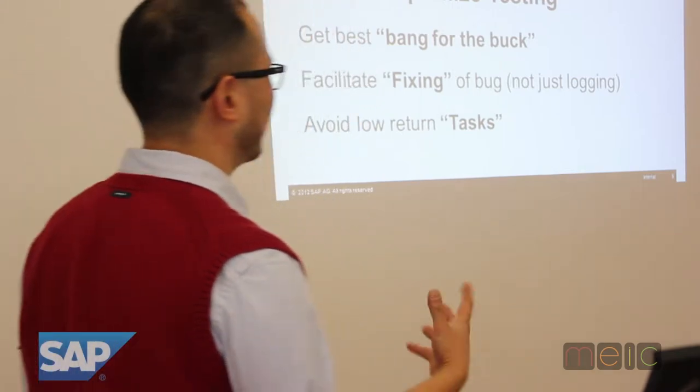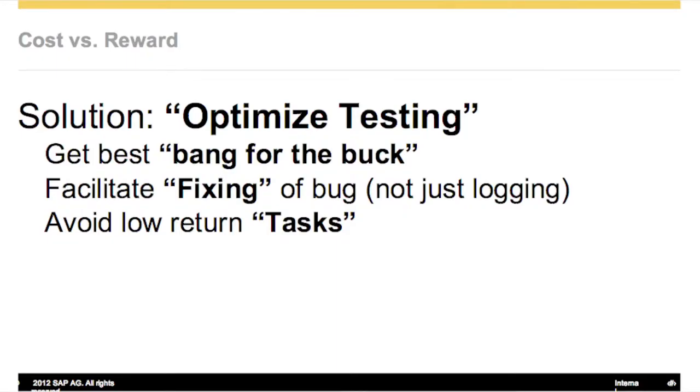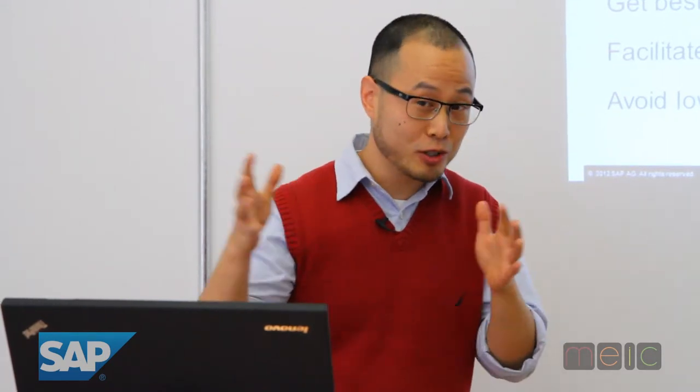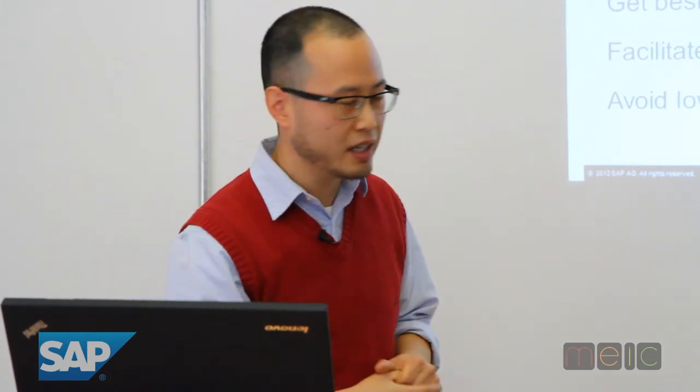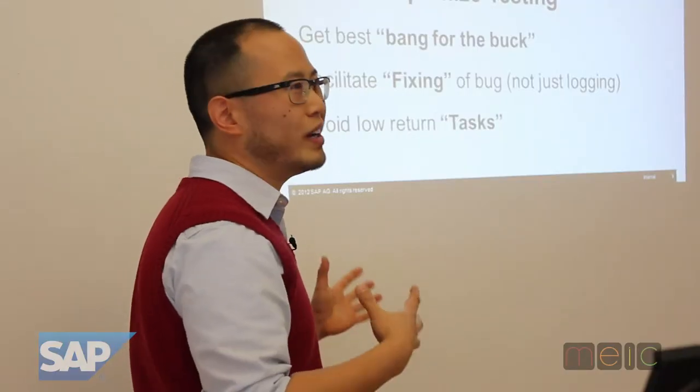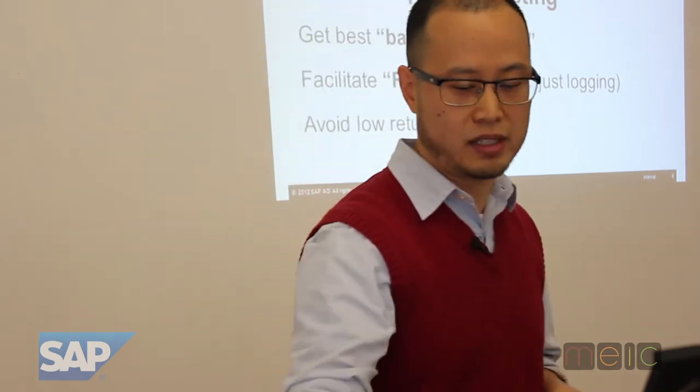So let's talk about optimizing. We want to get the best bang for our buck, but we also want to facilitate the fixing of bugs. Even as testers, when we talk about testing versus quality assurance, the idea of testing is not to generate as many bugs as possible — the idea is better quality. You can have a whole bunch of bugs, but if they don't get fixed, it's kind of like having a little dirty secret that you don't tell anybody. Fixing things is the yin and the yang of the testing part. We want to avoid low-return tasks — we have this zero-sum game and we want to optimize as much as possible.